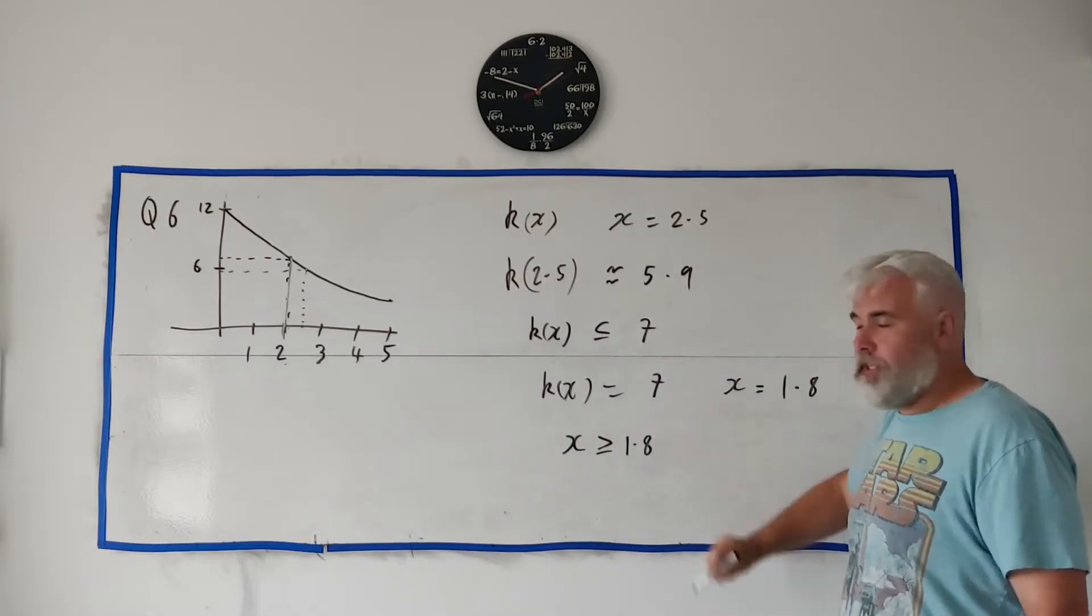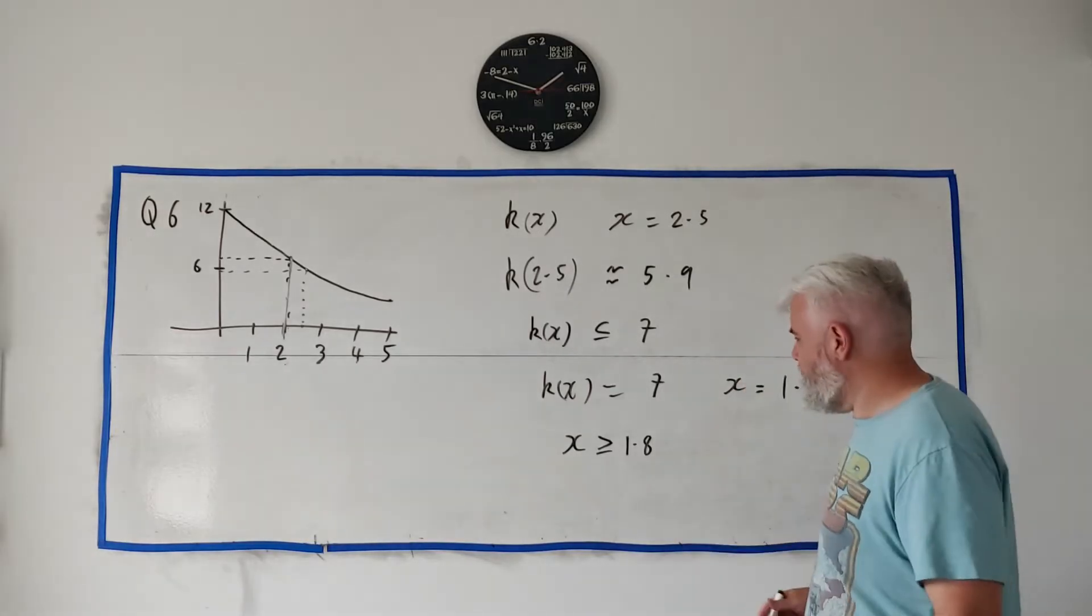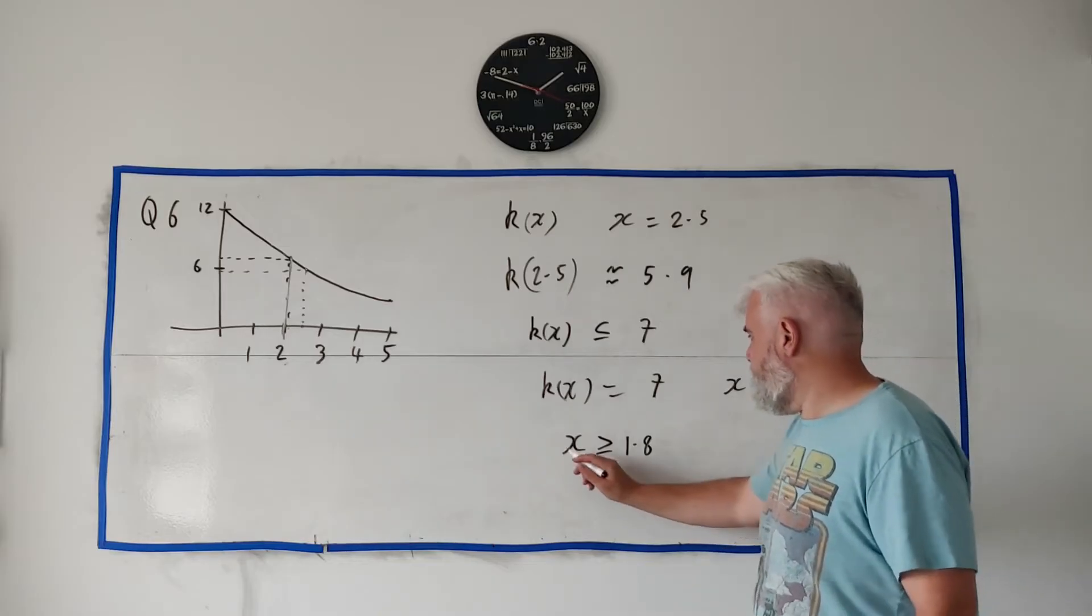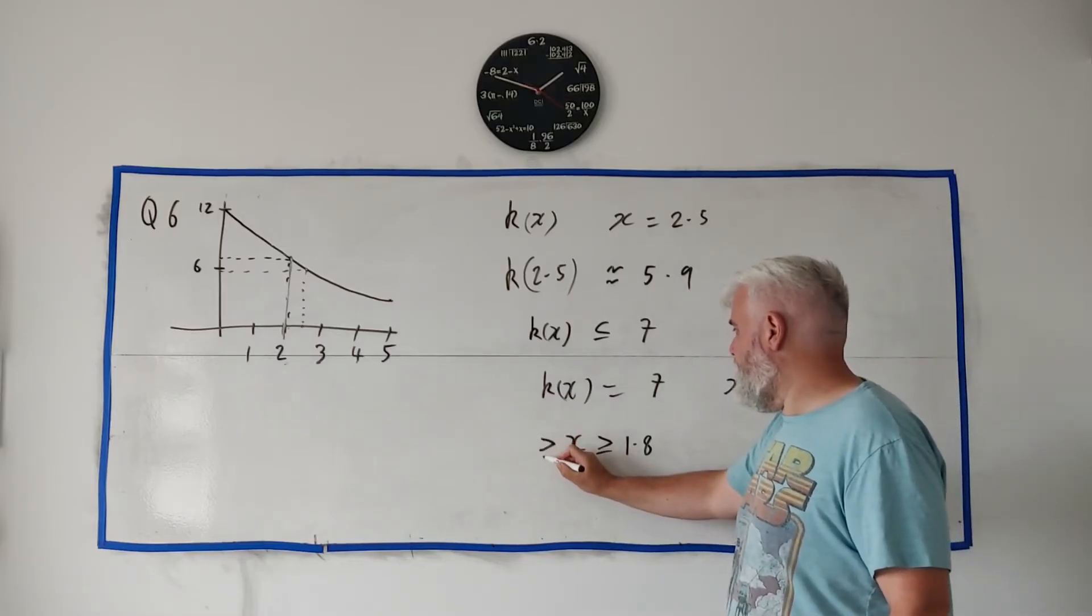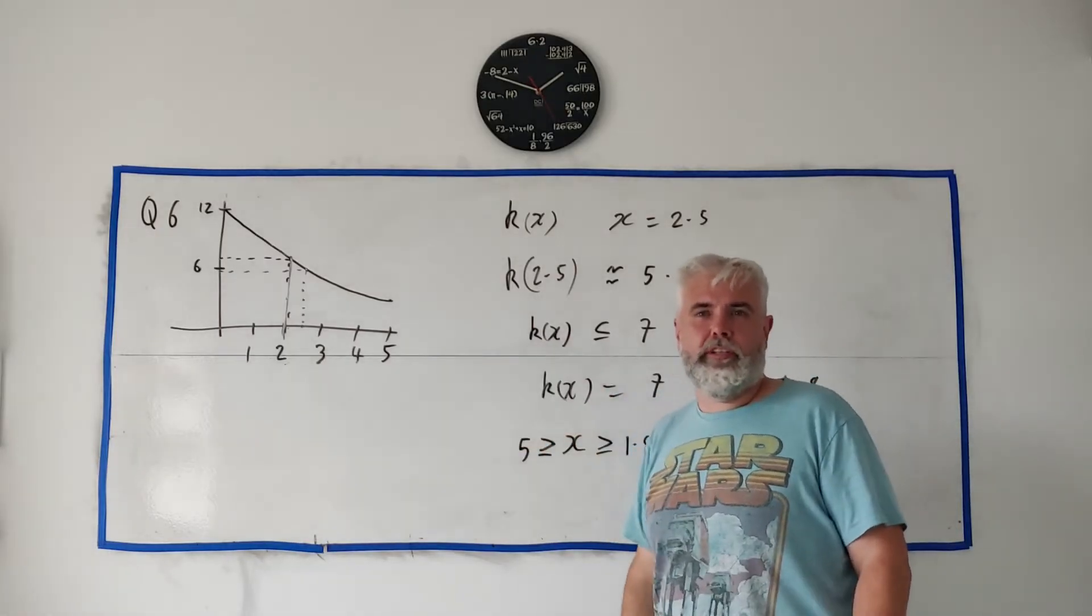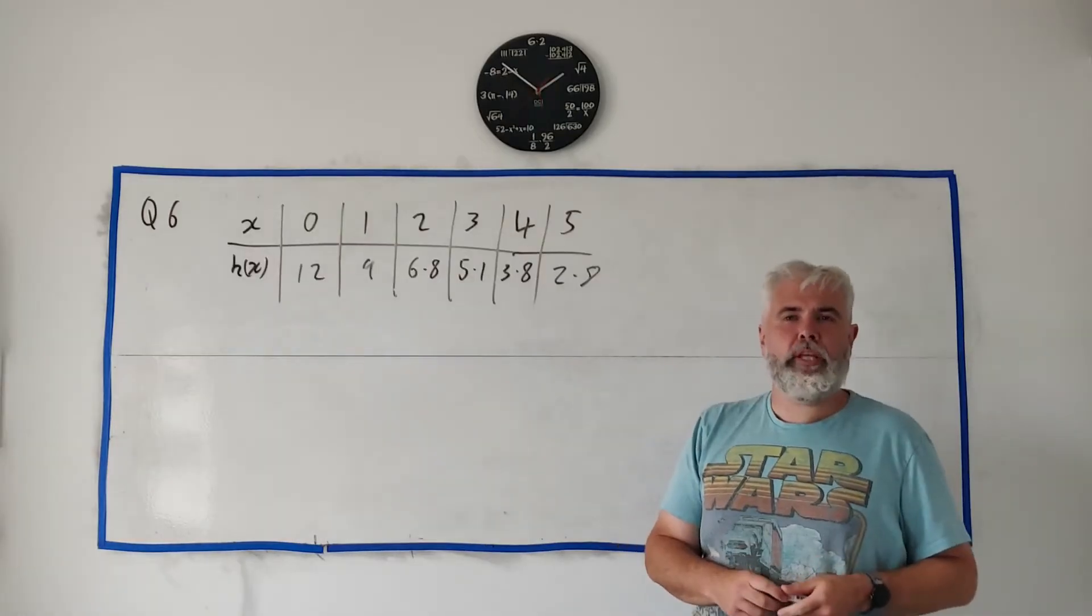So when x is greater than or equal to whatever your guess was, 1.8. And you could also, I think you'd get full marks for that, but you probably should say that x is also less than or equal to five because that's the domain they give. But you won't lose any marks for that I don't believe.